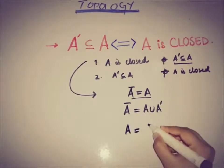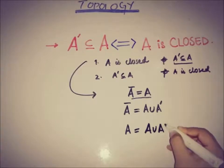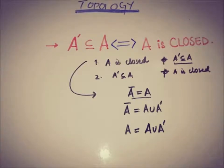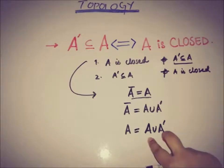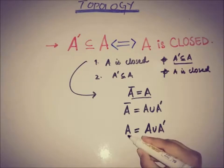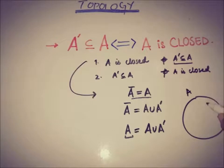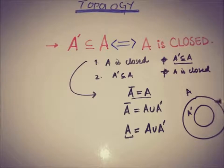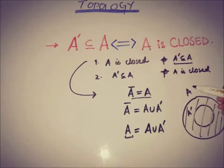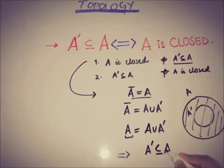Since A is a closed set, the closure equals A. We can replace A̅ with A, giving A = A ∪ A'. If A equals the union of two sets, this implies A is the larger of the two, meaning A' ⊆ A. This completes the proof of the necessity direction.